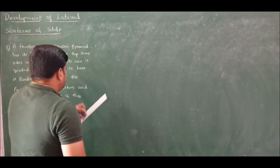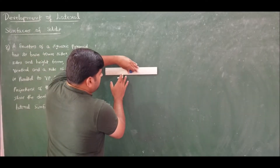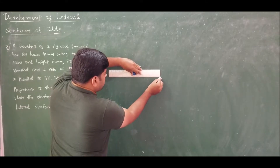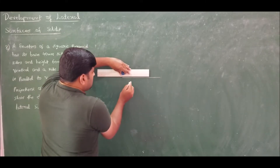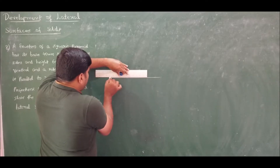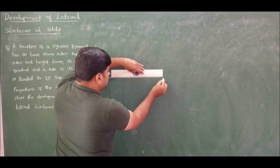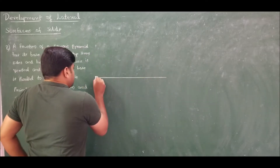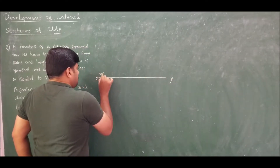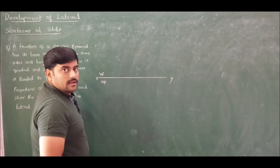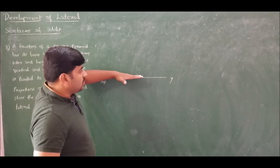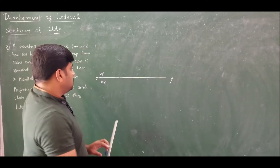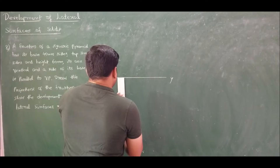Let us draw the front and top view of the given problem. For a solid resting on HP, always draw the top view first, and from the top view extract the front view - keep this in mind. We have the XY line, the vertical plane, and the horizontal plane. At the bottom, the square dimension is 40 mm, and at the top, the square dimension is 16 mm. So lay down two squares.